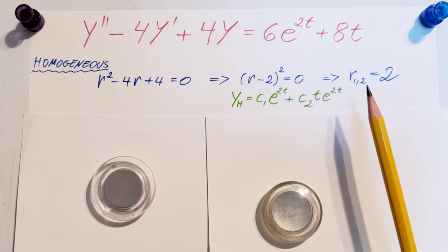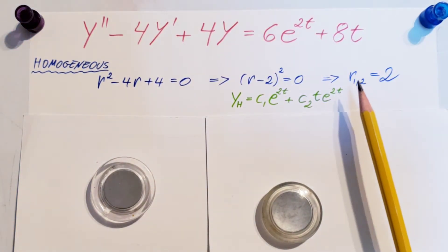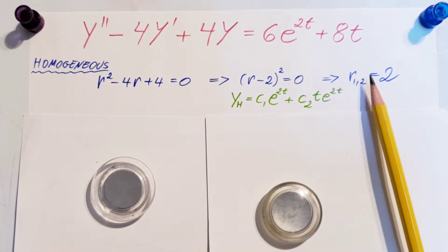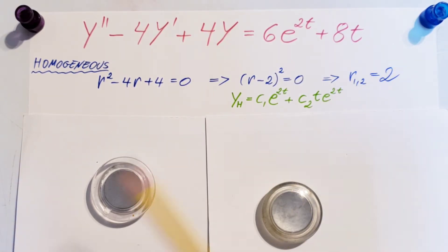This is a situation where we have two real roots. There's three scenarios: real roots that are distinct, real roots that are the same, and complex roots. This one is when we have two the same and they are real.